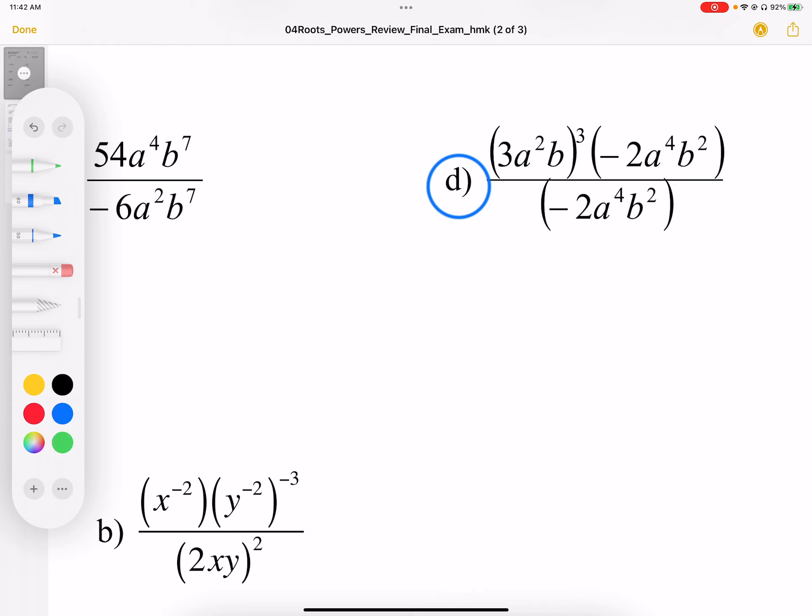I'm going to start with the 3. So I get 3 to the power of 3, and then a to the power of 2 to the power of 3. That's two a's and three groups of two a's, so that means I have six. I multiply those powers together.